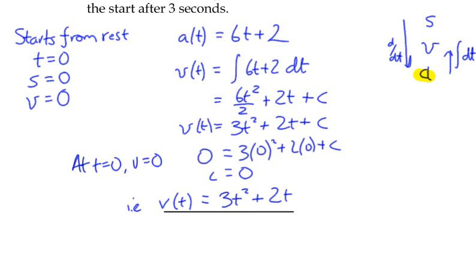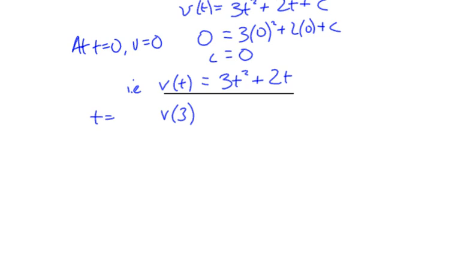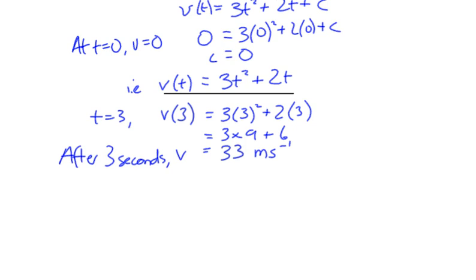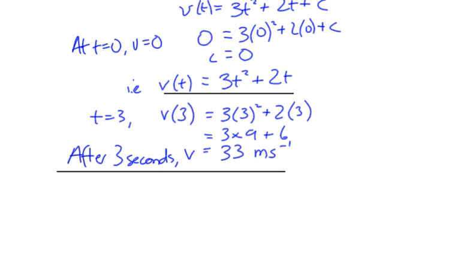The question asks us to determine the velocity after three seconds. So v(3) — when t is 3 — gives us 3 times 9 plus 6, which is 27 plus 6 equals 33. The velocity after three seconds is 33 metres per second. That's the solution to the first part.